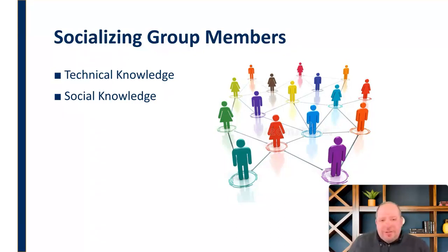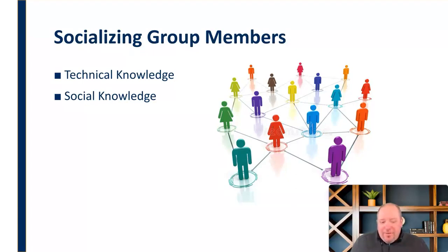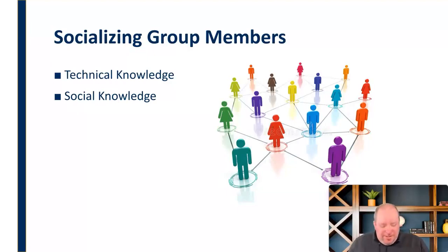We also need to provide them with social knowledge — the more gray area part of this. It's the behavioral expectations and relational expectations we have within that group. How do we talk to each other? How do we communicate? Not only literally — do we email, do we call — but how formal are we? Is it okay to joke around? Are we more formal or less formal? Who do we talk to and how do we talk to them? Not just communicating, but how do we behave in these situations? What are some of the lesser-known rules that might exist for this group?